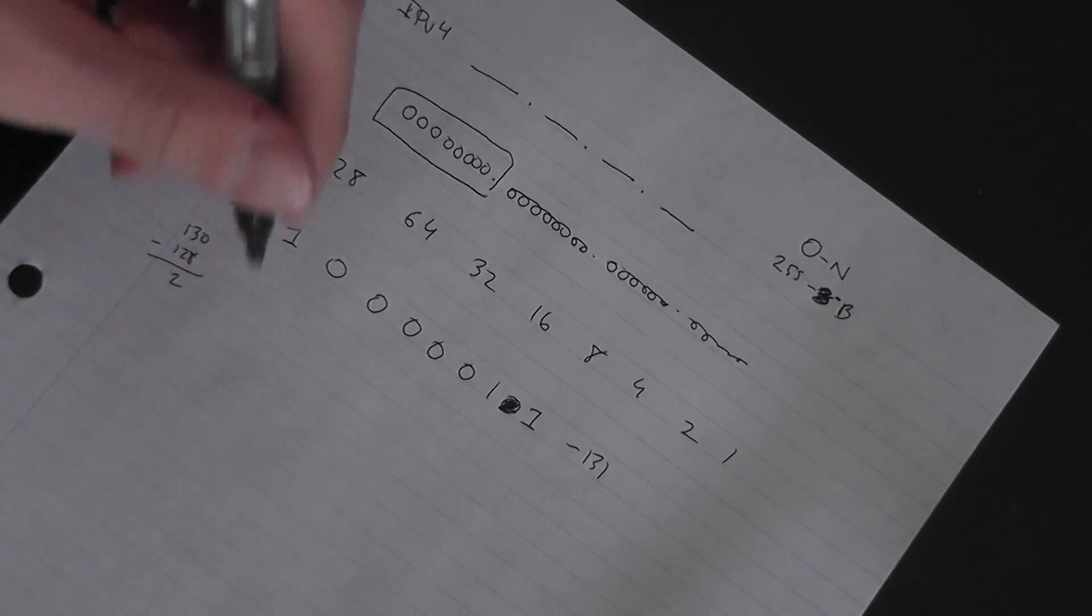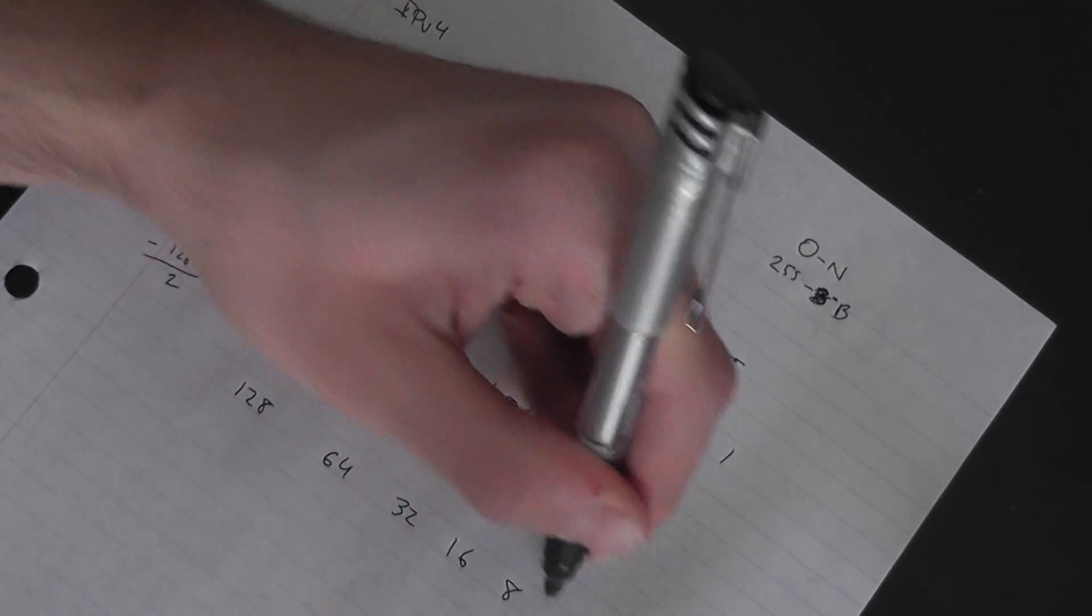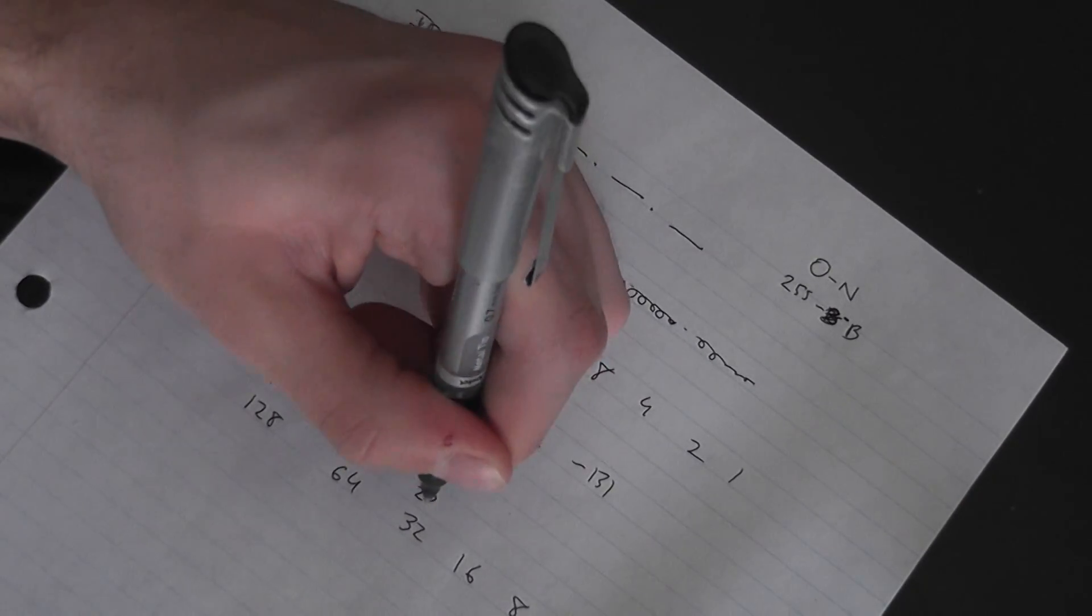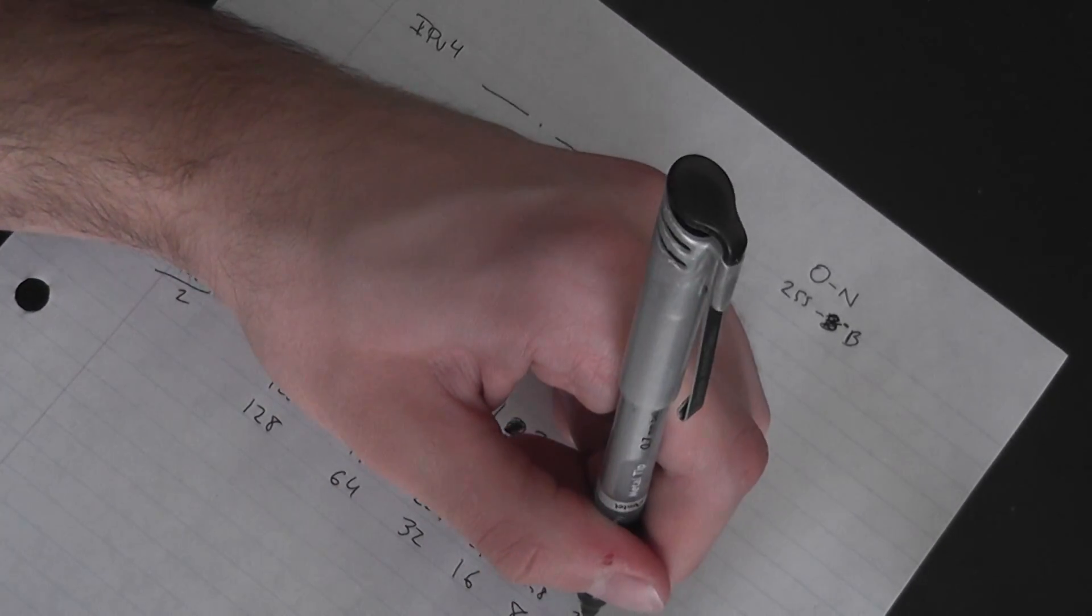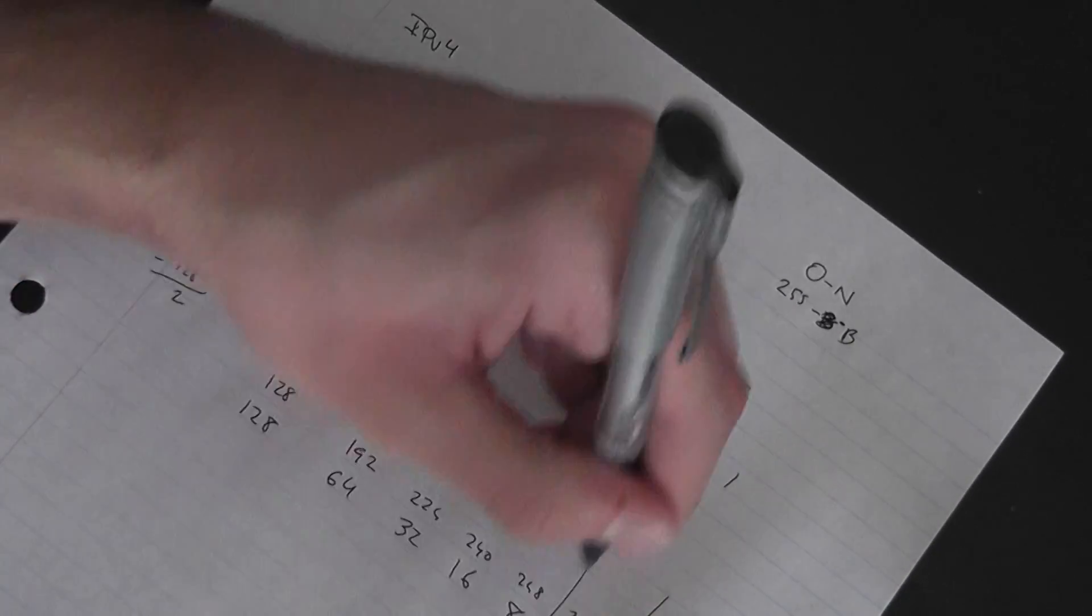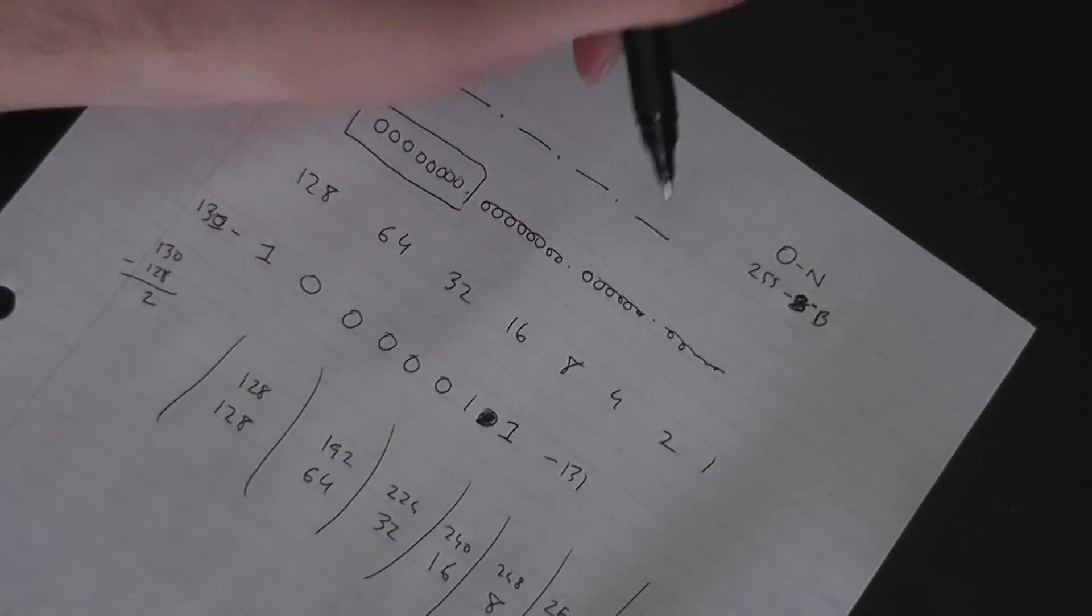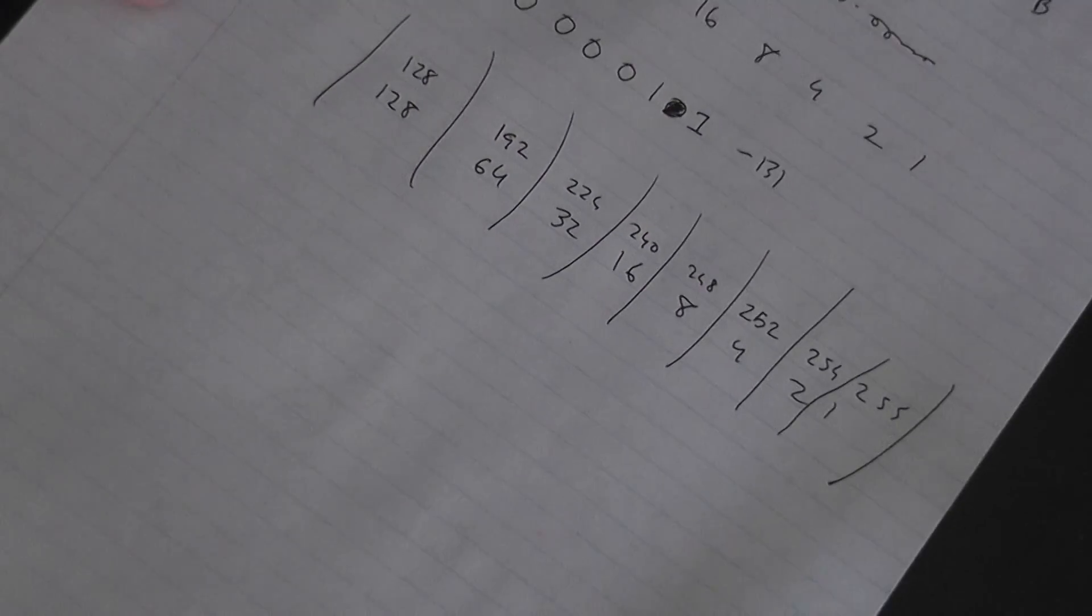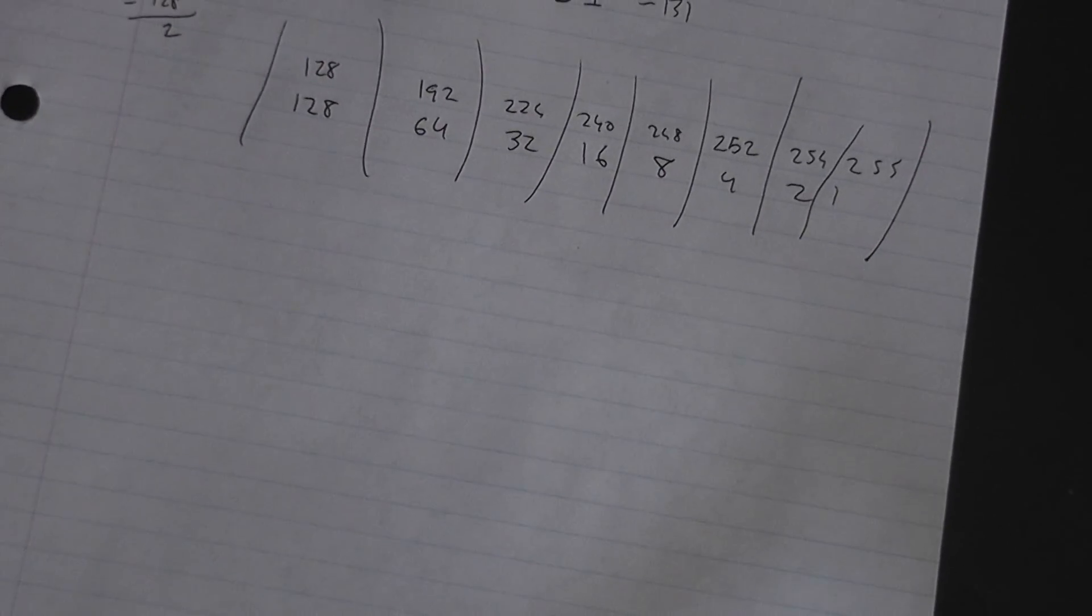So let's do an example right now. I'll make this chart again: 128, 64, 32, 16, 8, 4, 2, 1, and then 252, 254, 255. Let me just separate this. Hopefully you guys can read that.